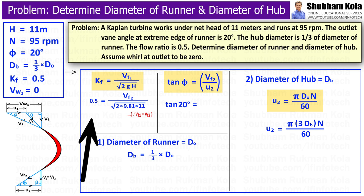Therefore, flow ratio Kf is given by formula, Vf1 divided by square root of 2gH, where head is given, g is 9.81 and flow ratio is 0.5. So by calculating this, we will get Vf1 and which is also equal to Vf2.